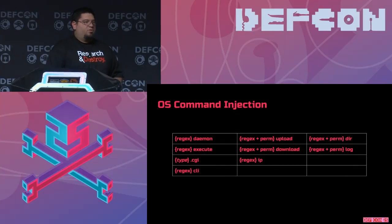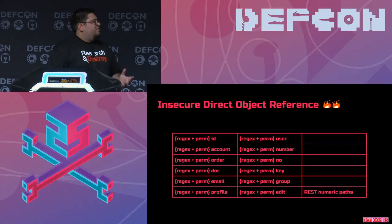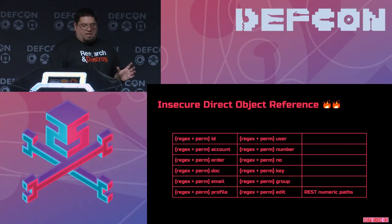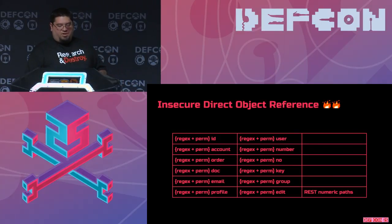OS command injection has a smaller list, but things like daemon, execute, upload, download, dir, log — things related to command line, usually on Linux. Insecure direct object reference covers things related to a user's state traversing the application: ID, account, order, doc, email, et cetera.